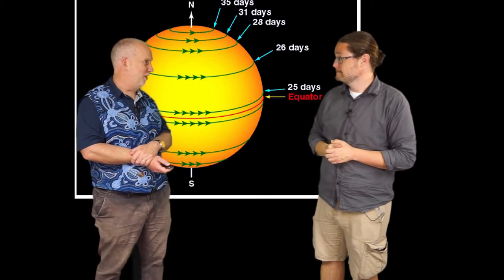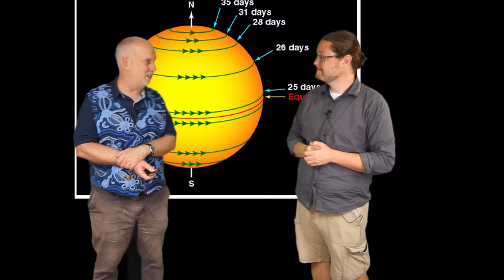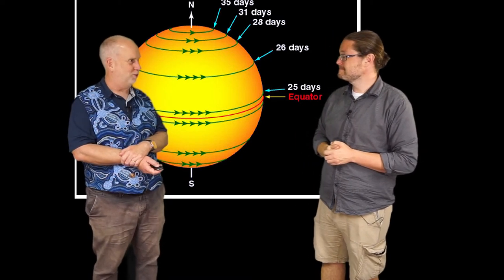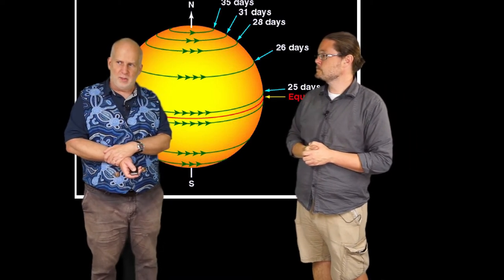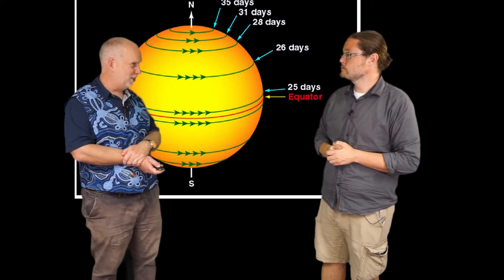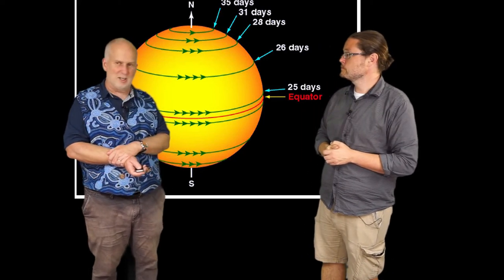Yeah, this has been known for over 2,000 years, and both ancient Chinese and Egyptian astronomers had found this out with the sunspots. And this is really important because it's actually going to produce the magnetic field.